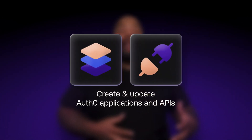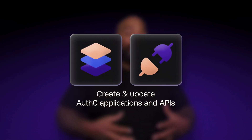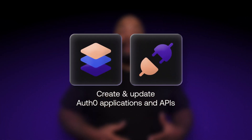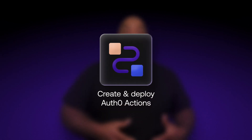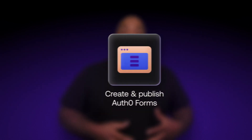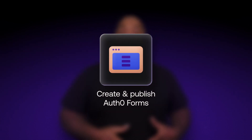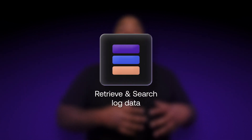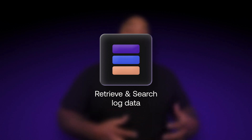Just by prompting your AI agent, you can request it to do things in your OffZero account, like create and update OffZero applications and APIs, create and deploy OffZero actions, create and publish OffZero forms, or retrieve and search your log data.